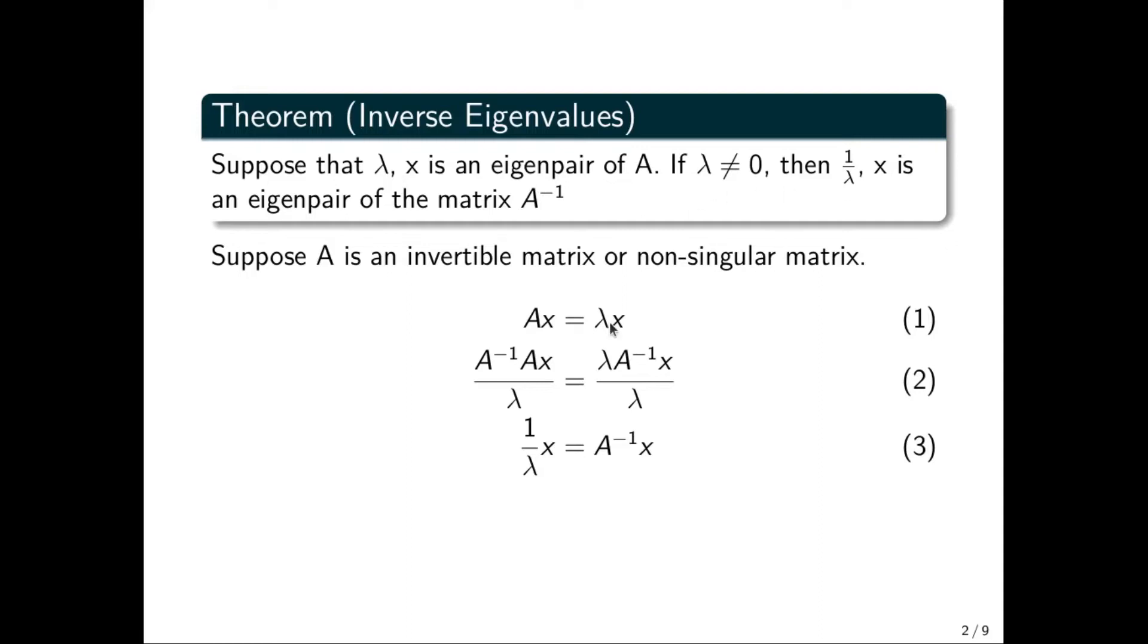Suppose A is not a singular matrix or is non-invertible. Then we are saying Ax = λx, which is the eigenvalue equation principle or theory. We then pre-multiply our equation (1) by A inverse and divide the same equation (1) by λ, which gives rise to equation (2). A inverse times A gives us the identity matrix.